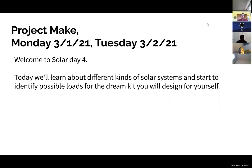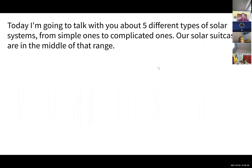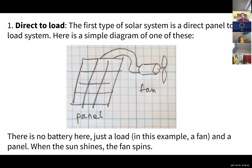We're going to talk about different kinds of solar systems and start to identify possible loads you might imagine putting on a system that you design. So let's get to it. We have five different types of systems. You can turn off your monitor if you want. There's a lot more than this, but these are the five main types.